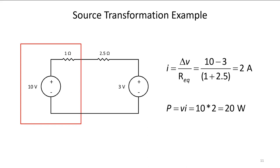To do that I know that on the left hand side of the circuit the potential is 10 volts and on the right hand side of the circuit at the top the potential is 3 volts. So the voltage drop across the one ohm and the two and a half ohm collectively is 10 minus 3 volts.